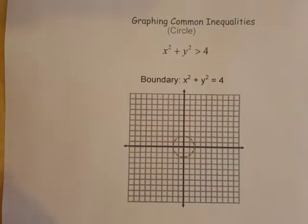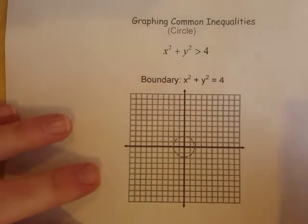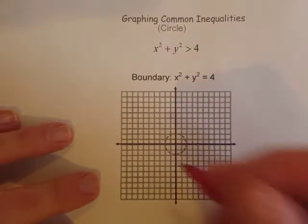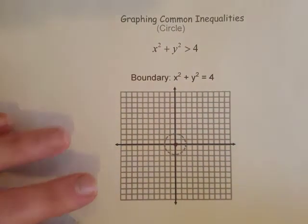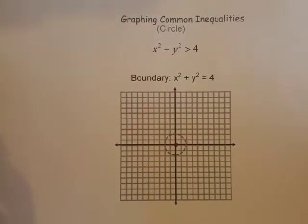And then as far as the shading goes on this circle, I would definitely just choose a test point. So our test point, let's do 0, 0 because that's not right on the line.